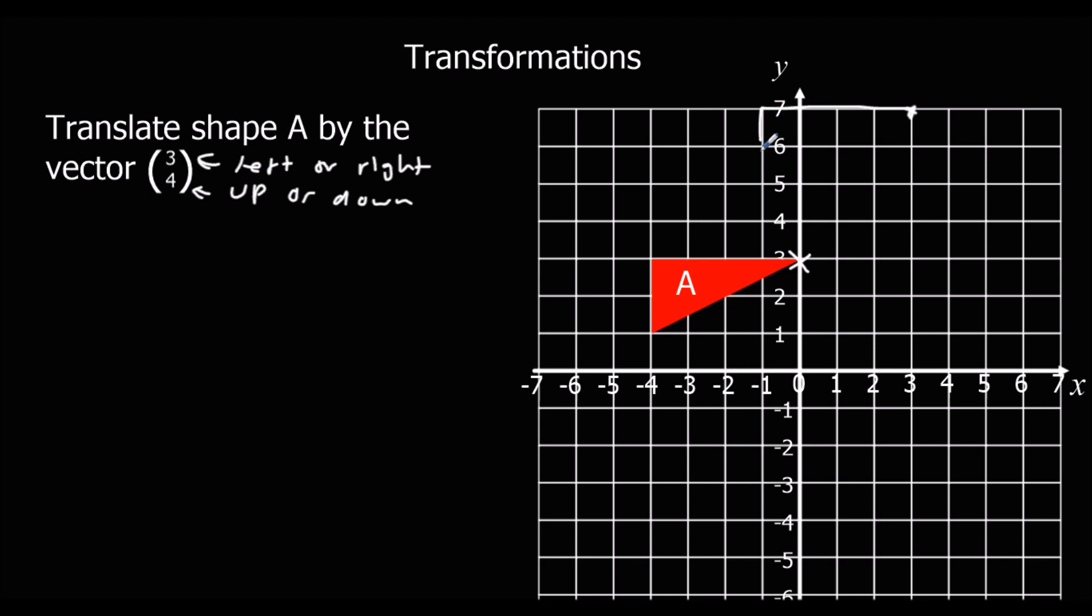So 4 along, 2 down. And that's our new triangle. Use a ruler if you can. So that becomes our new triangle. We'll call it triangle B.